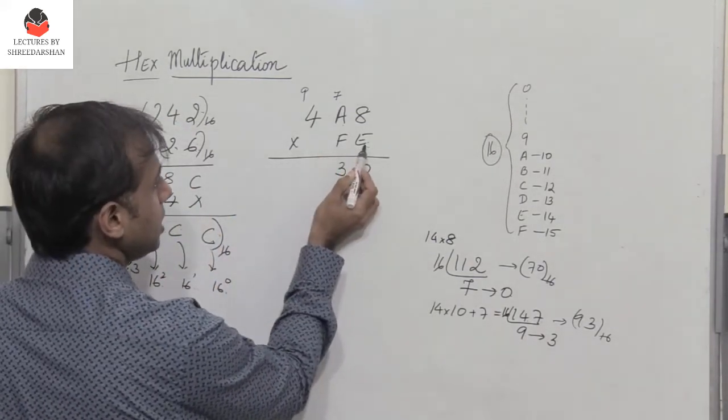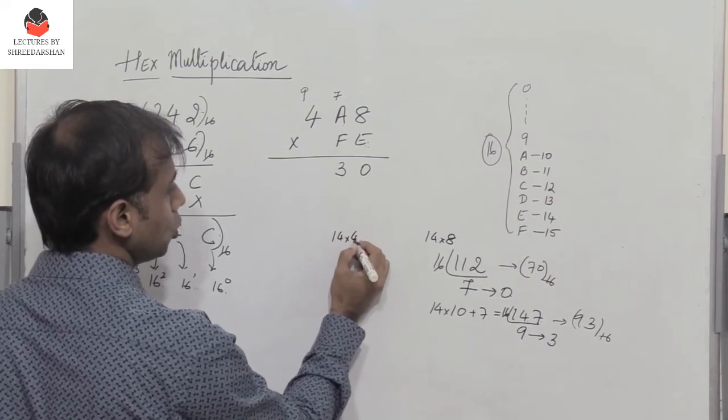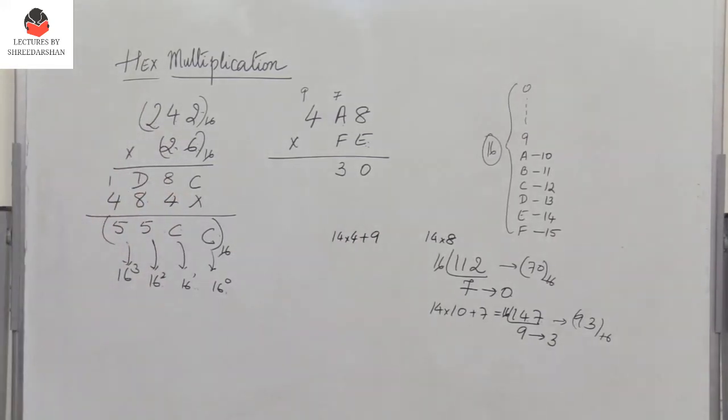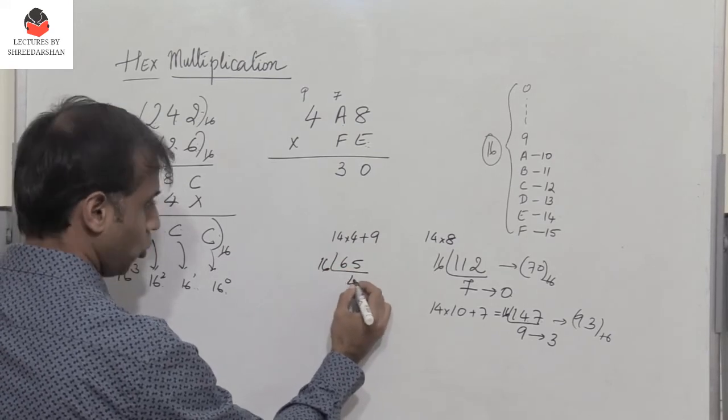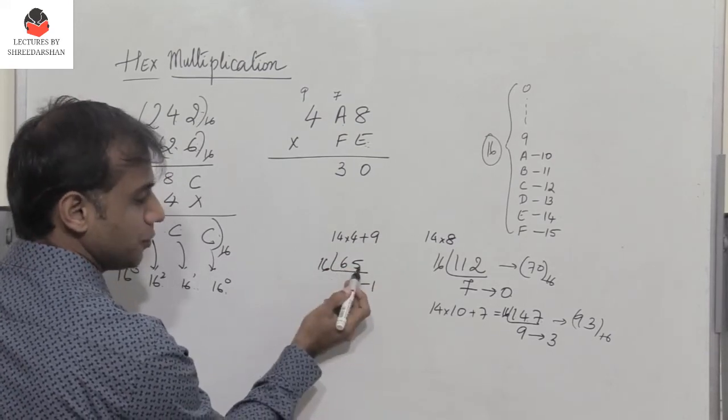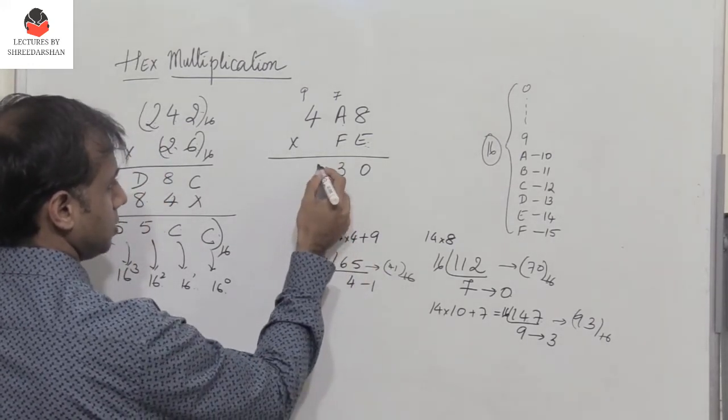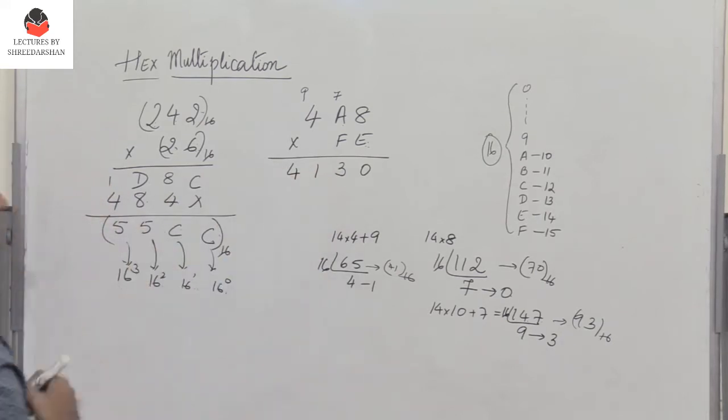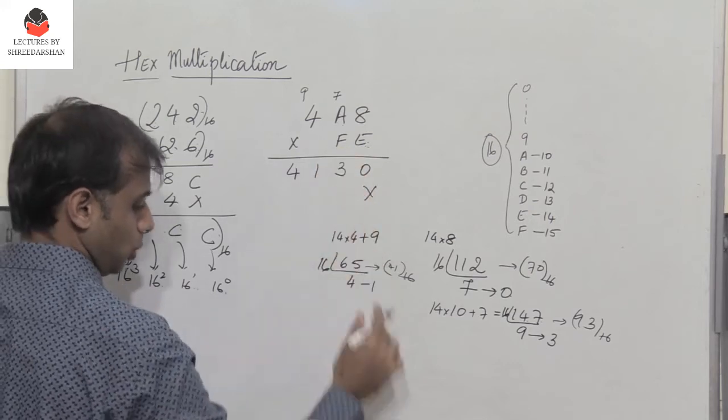So now multiply E with 4. So E is again 14 into 4 plus 9. So 14 into 4 plus 9 gives me 65. So again 65, divided by 16 you get 4, 1. So 65 in hex is 4, 1. So you write 1, 4. So 4A8 multiplied with E is 4, 1, 3, 0. So next I have to multiply 4A8 with F.